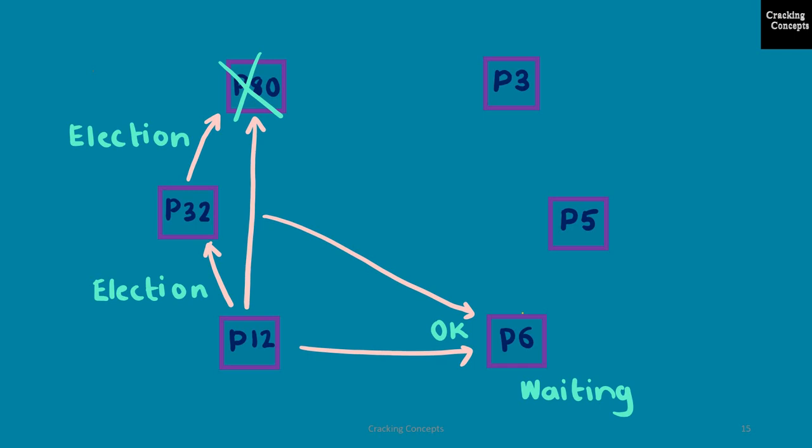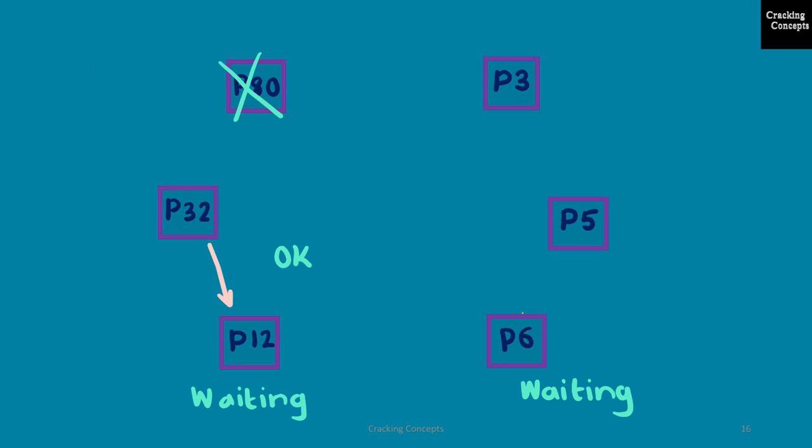As you can see, P12 has replied with an OK message and P32 also did the same. After replying with an OK message, each process starts an election by itself — P12 sends an election message to P32 and P80, and similarly P32 starts an election by sending a message to P80. P6 goes into a waiting state because it has sent an election message to P80 and is waiting for a reply.